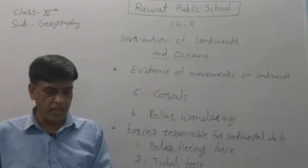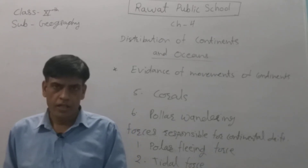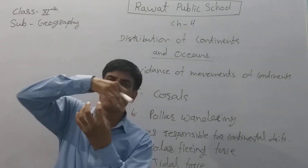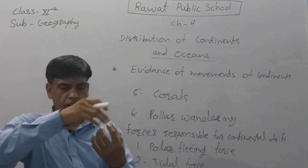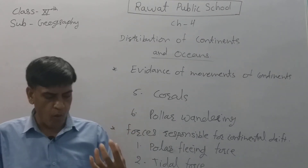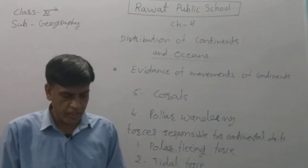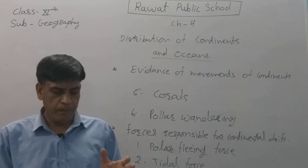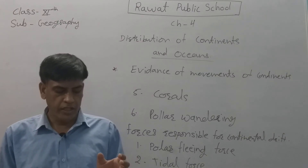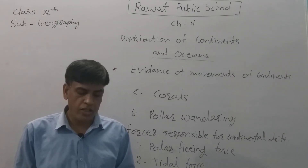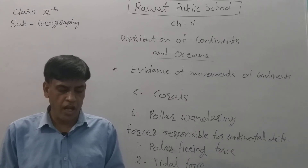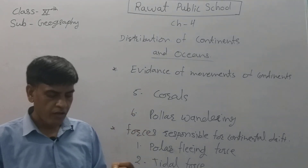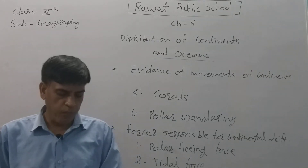The polar fling force is related to the rotation of the earth. The earth rotates round its axis, as a result of which material moves from the poles towards the equator of the earth. Earth अपनी axis पर round करती है, तो उससे minerals polar से equator की तरफ move करते रहते हैं। Consequently there is bulk at the equator and flattening at the poles. The tidal force is due to the attraction of the moon and the sun which causes tides in the oceans. Sun और moon के attraction के कारण जो tides आती हैं उससे जो force लगता है, that is called the tidal force.